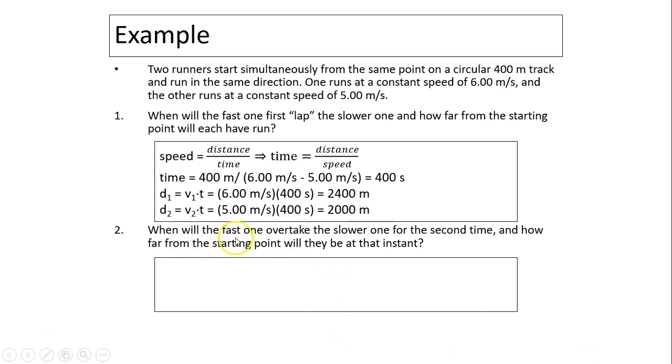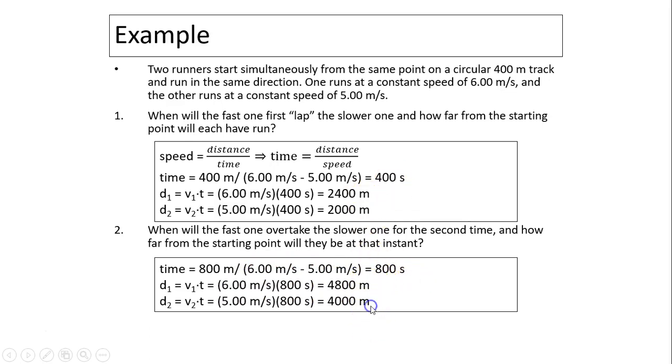Number two, when will the fast one overtake the slower one for the second time? And how far from the starting point will they be at that instant? Well, this is the first time. For the second time, you simply double the time, and you double the distance. But you can also think about the same procedure as we did in part one. So for two laps, the total distance is 800 meters, divided by the relative speed, which is 1 meter. So you have 800 seconds. You double the time. Similarly, you double the distance.